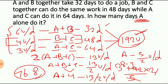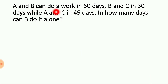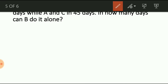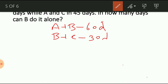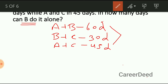Let us enter into the last question of the model: A and B can do a work in 60 days, B and C in 30 days, while A and C in 45 days. In how many days can B do it alone? Take the LCM of 60, 30 and 45, we get 180 units as the total work.